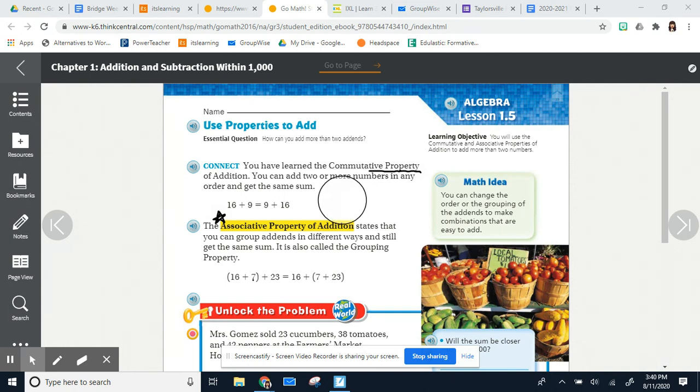This property also involves parentheses. So if you look here we're adding 16 plus 7 plus 23, and then over here they're adding 16 plus 7 plus 23 but they're grouping them differently. Over here we have 16 and 7 in the parentheses, and then over here we've got 7 and 23 in the parentheses. But either way these three numbers are going to add up to be the same.